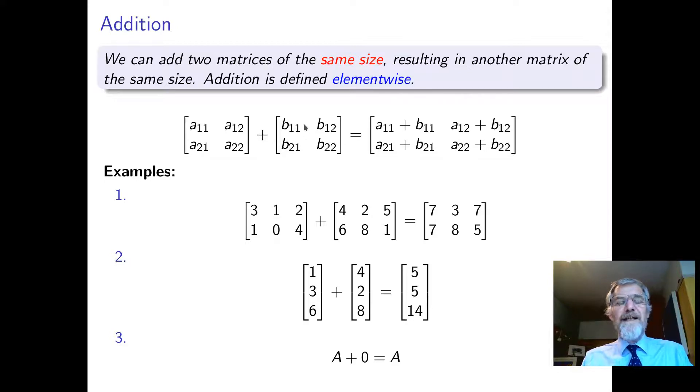Adding matrices is easy. What we do is we just add the corresponding elements. So A_11 plus B_11 gives us an element in the 11 position. When you add matrices, you get a matrix of exactly the same shape. And you can only add them if they're the same shape because you have to add the corresponding elements. For example, three plus four is seven here.